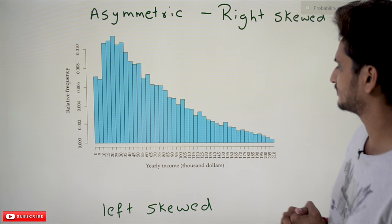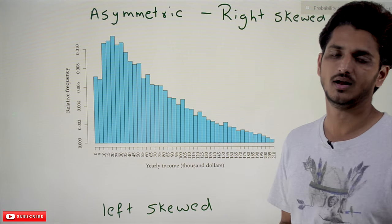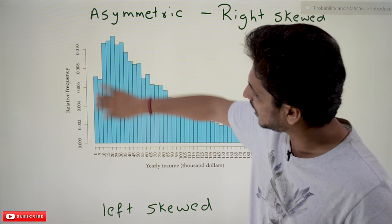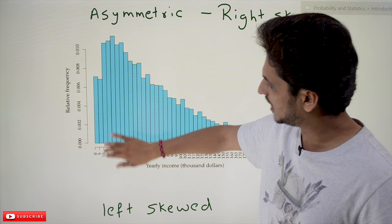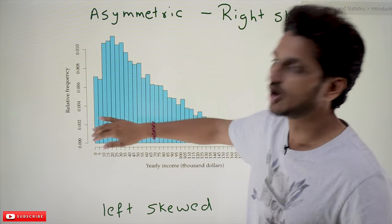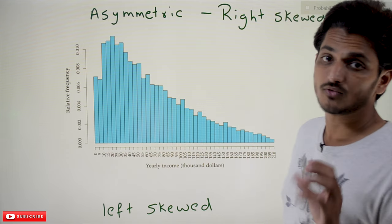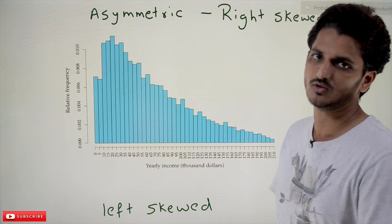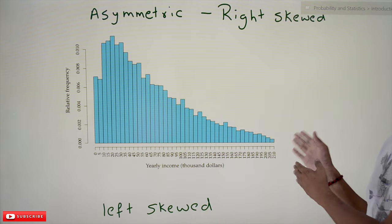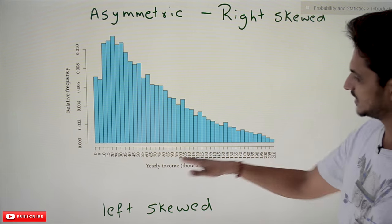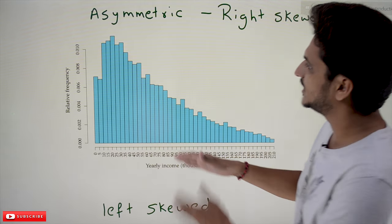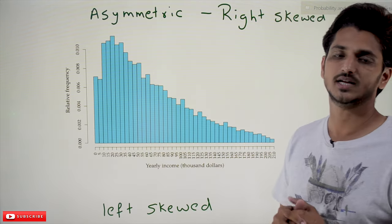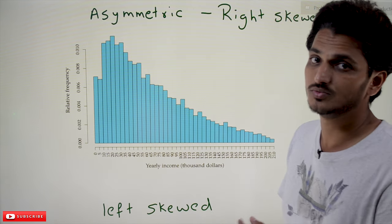If you plot the distribution of yearly income of the population of India — on the X-axis the income ranges, on the Y-axis frequency showing how many people earn that amount — most of the population earns between ten to thirty-five thousand annually. As income increases, very few people earn that higher income. The data is skewed heavily to the right, which is why it is called a right skewed distribution.